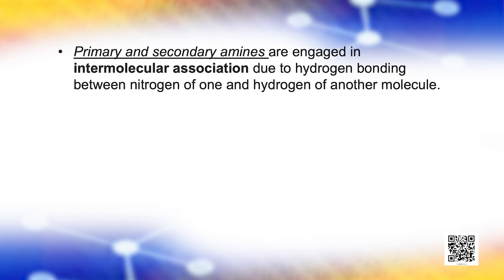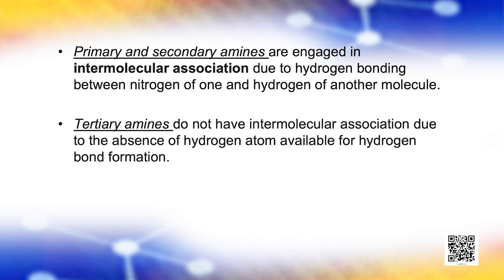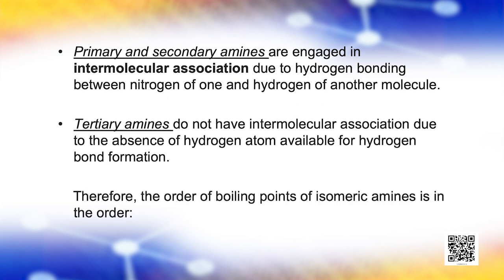Primary and secondary amines are engaged in intermolecular association due to hydrogen bonding between nitrogen of one and hydrogen of another molecule. This intermolecular association is more in primary amines than in secondary amines as there are two hydrogen atoms available for hydrogen bond formation. Tertiary amines do not have intermolecular association due to the absence of hydrogen atom available for hydrogen bond formation. Therefore, the order of boiling points of isomeric amines is primary greater than secondary greater than tertiary amines.